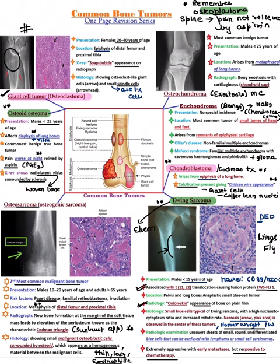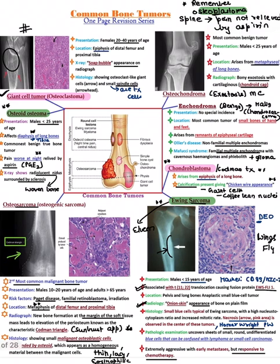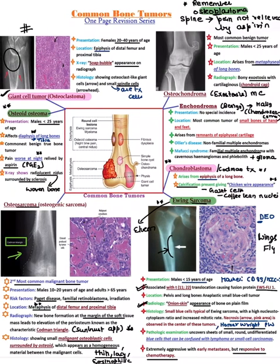Osteochondroma is the most common benign bone tumor. It arises from the metaphysis and is also known as exostosis. The gene mutations involved are EXT1 and EXT2. Radiograph shows bony exostosis — an extra cartilaginous growth with a cartilage cap all around it.